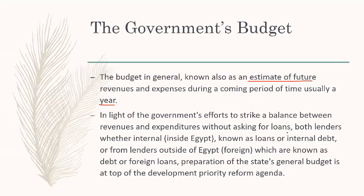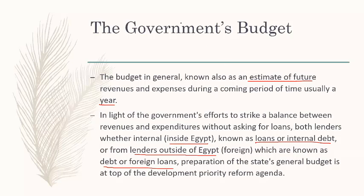In light of the government's effort to strike a balance between revenue and expenditure without asking for loans — whether internal loans, known as domestic debt, or loans from outside Egypt, known as foreign loans — the preparation of the state general budget is atop the development priority reform agenda. This means the budget is the tool of the government to achieve its reform plan. Whenever an economic reform is needed, the budget is the first tool to be used.